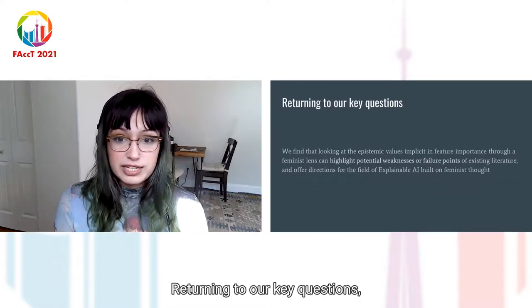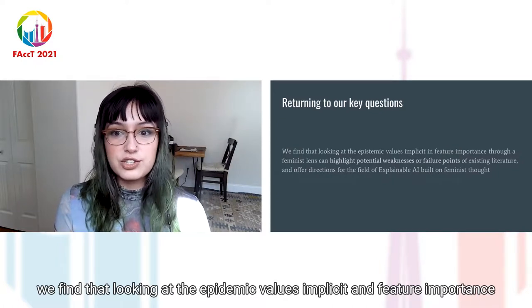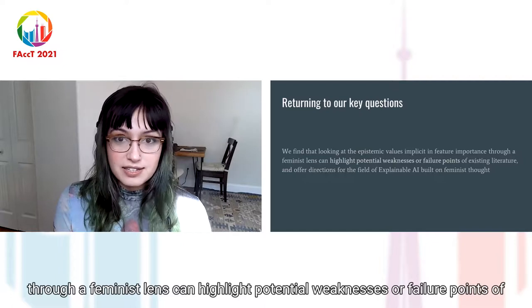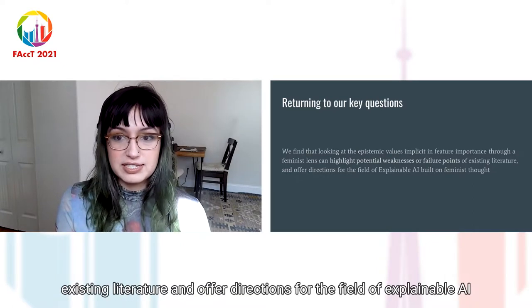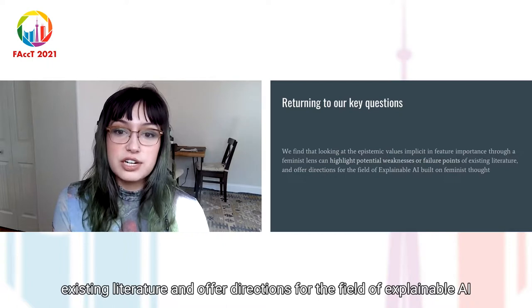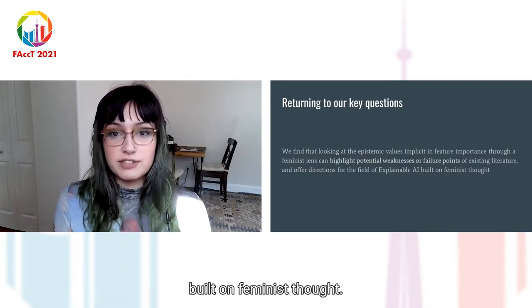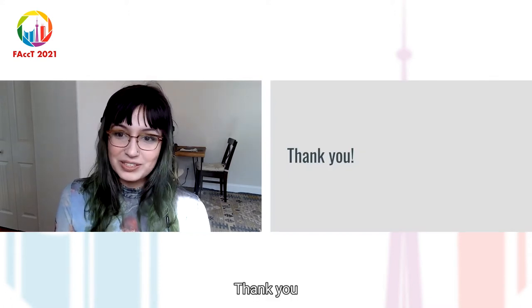Returning to our key questions, we find that looking at the epistemic values implicit in feature importance through a feminist lens can highlight potential weaknesses or failure points of existing literature and offer directions for the field of explainable AI built on feminist thought. Thank you.